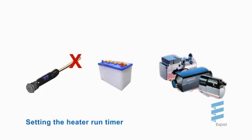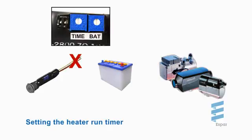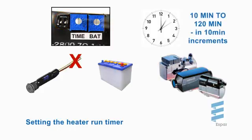The heater run timer can be preset by turning the potentiometer labeled time. The heater run time preset will be read in minutes when the dip switch number one is in the down position. The minimum setting is 10 minutes and the maximum setting is 120 minutes in 10 minute increments.